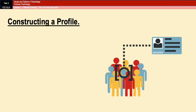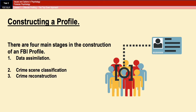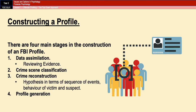There are four main stages in the construction of an FBI profile: data assimilation, crime scene classification, crime reconstruction, and profile generation. Data assimilation involves reviewing the evidence — crime scene photographs, pathology reports, witness reports, and so on. Crime scene classification involves deciding whether it's an organised or disorganised crime. Crime reconstruction is about generating a hypothesis regarding the sequence of events and the behaviour of the victim and the suspect. Finally, profile generation involves creating a hypothesis relating to the likely offender — for example, demographic background, physical characteristics, psychological characteristics, and behaviour. All FBI profiles tend to go through these four stages.